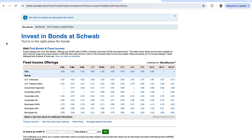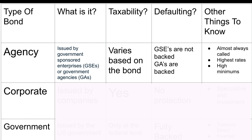Hey guys, welcome back to another video. As you can see on my screen, there are a whole bunch of different types of bonds available for purchase. We've got to be quick today because I'm going to be explaining three of them in just three minutes. There's a lot more than three, but today we're going to be talking about agency bonds, corporate bonds, and government bonds, also known as treasuries.